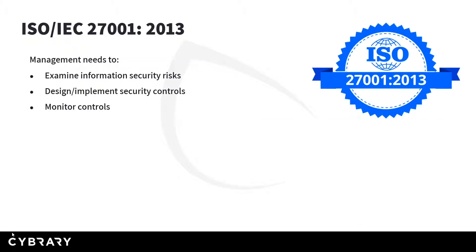ISO/IEC 27001 (2013 version) is a standard. It sets a precedent that management needs to examine the organization's information security risks and continually re-examine them to ensure they remain relevant. Management must then design and implement security controls to address those risks, monitor those controls to make sure they're still working and relevant, and adapt or improve them if not.